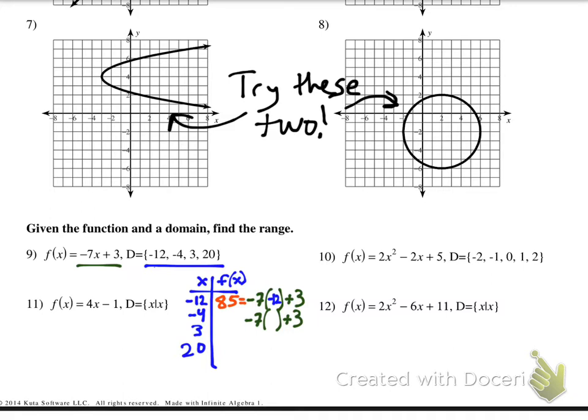So that means that 85 is one of the elements in the range. Let's plug in negative 4 here. Negative 7 times negative 4 is 28, so that is 31. And you guys can see, you guys can do the math next to if you want. All four of those numbers are in the range. So find the range? Well, our range is just 85, 31, negative 18, and negative 137.